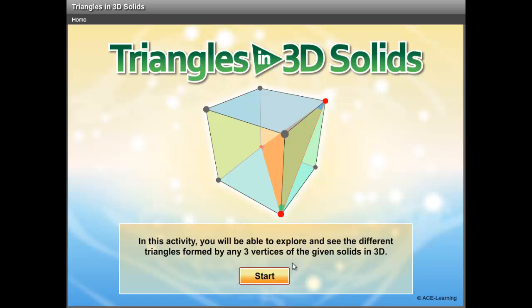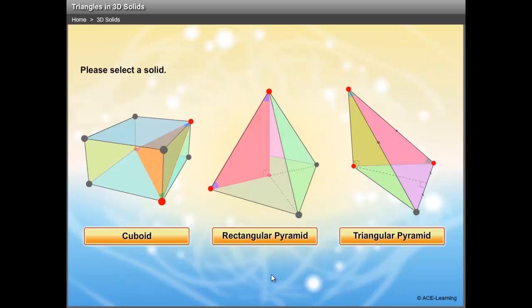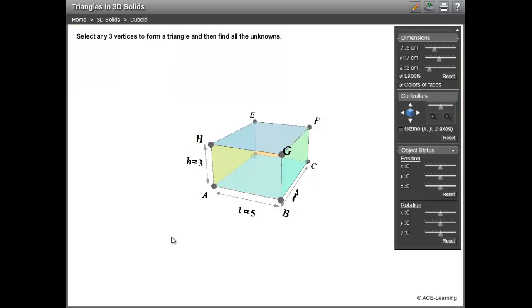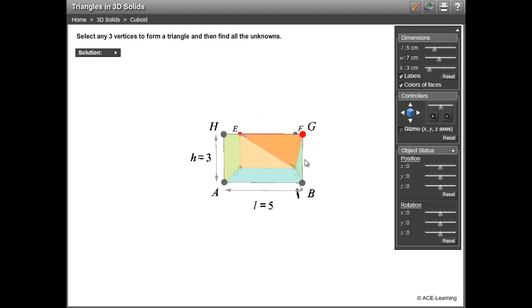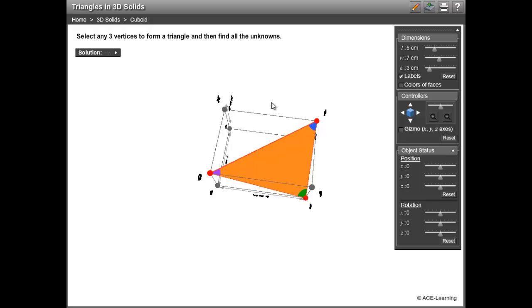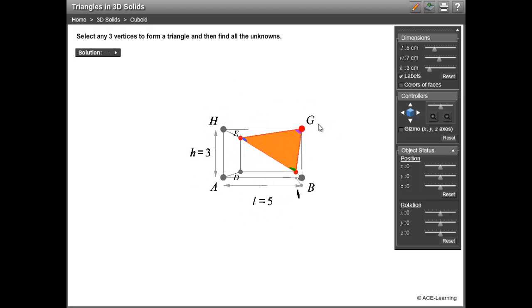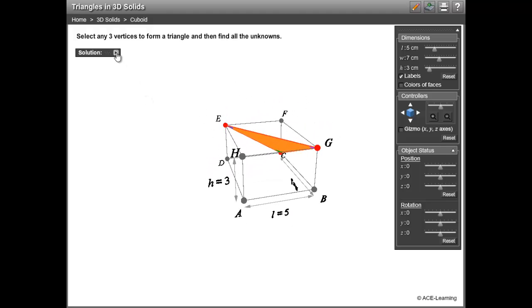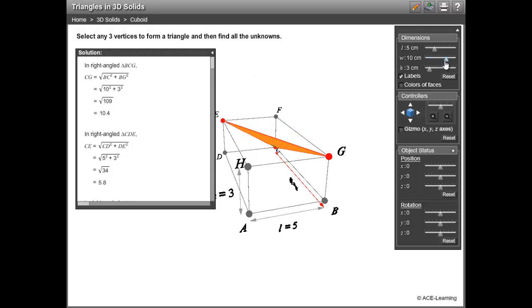Now let's take a look at the 3D tool for triangles in 3D solids. To begin, select a solid. Now let's have the triangle in the solid. If you want the reference triangle to stand out, no problem. Solutions are also provided. Notice how the values in the solution changes when the object is modified?